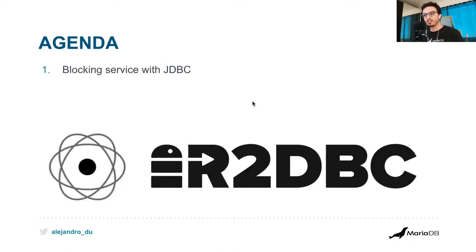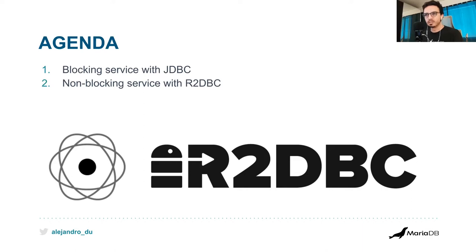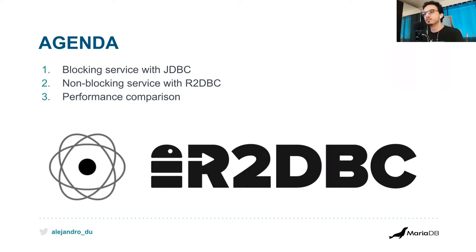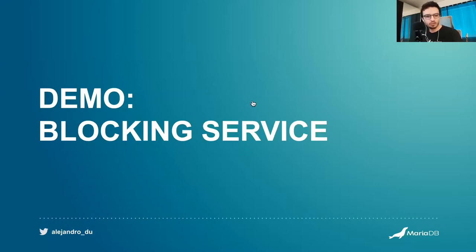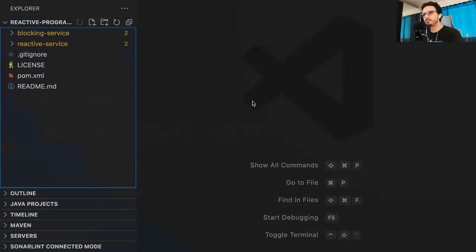We're going to talk about R2DBC and Project Reactor. The idea is that we'll implement a blocking service with JDBC, then implement a non-blocking service with R2DBC, and then compare the two. So it's these three parts to structure this talk. Let's jump into the IDE.